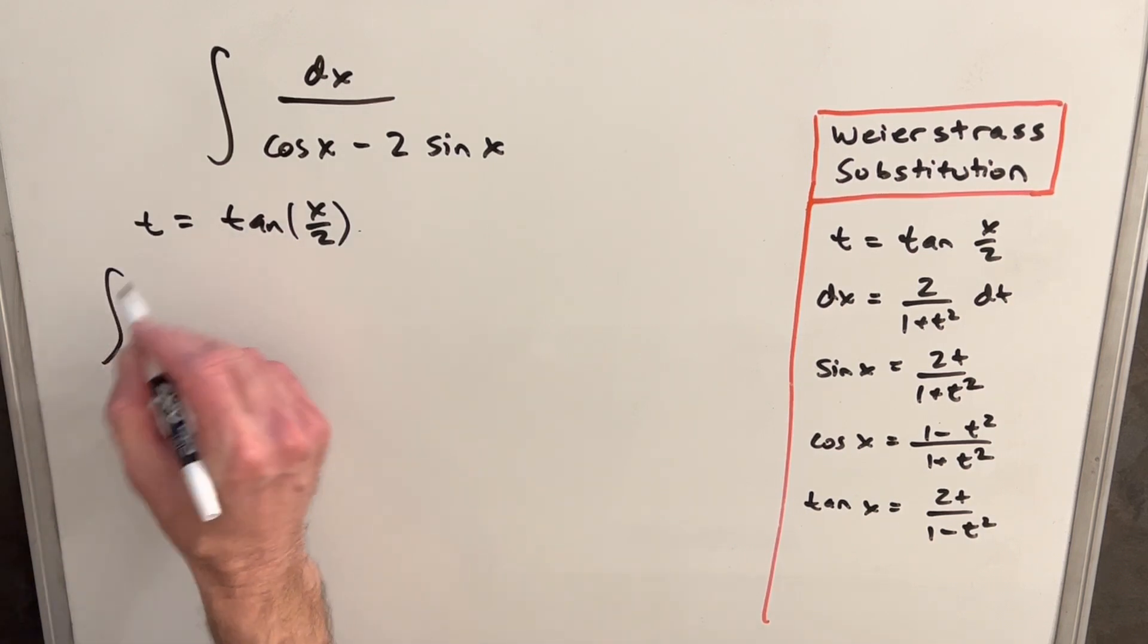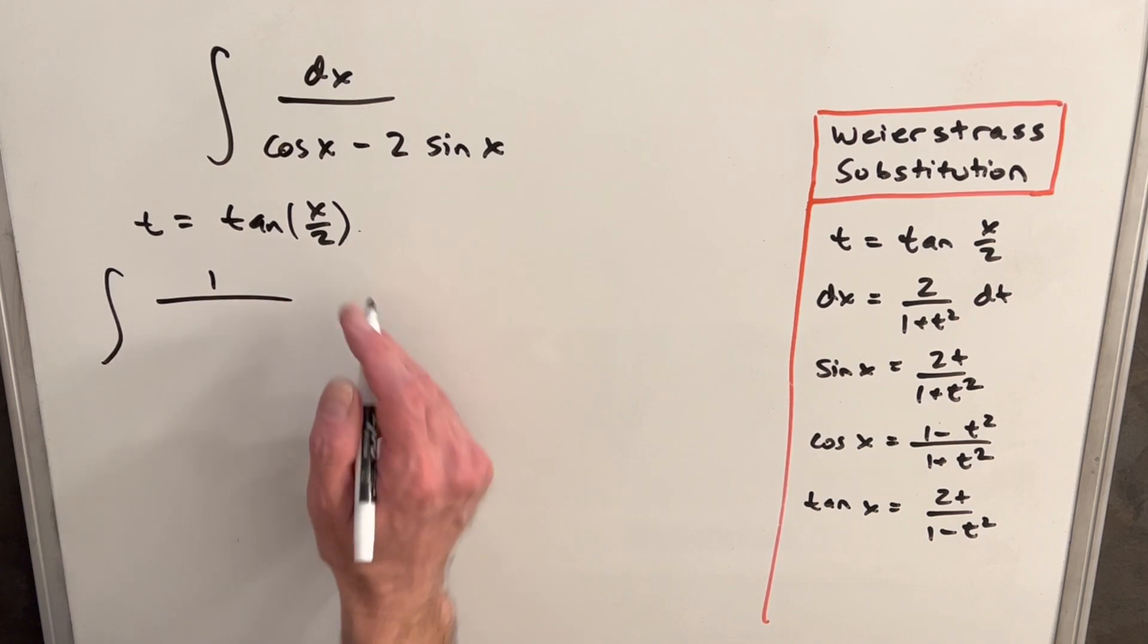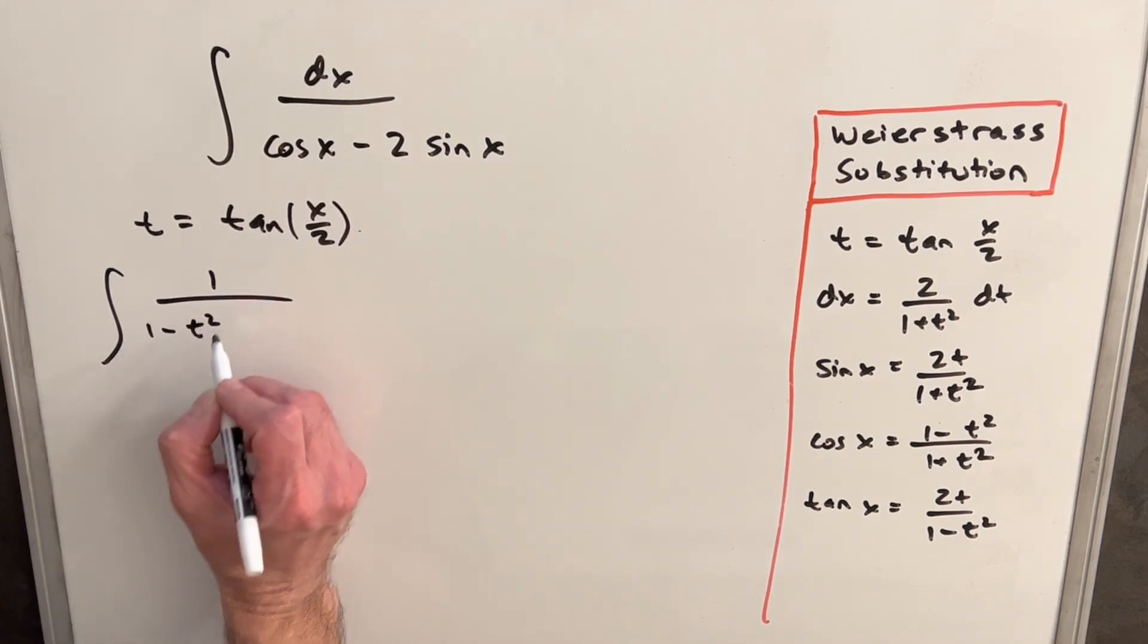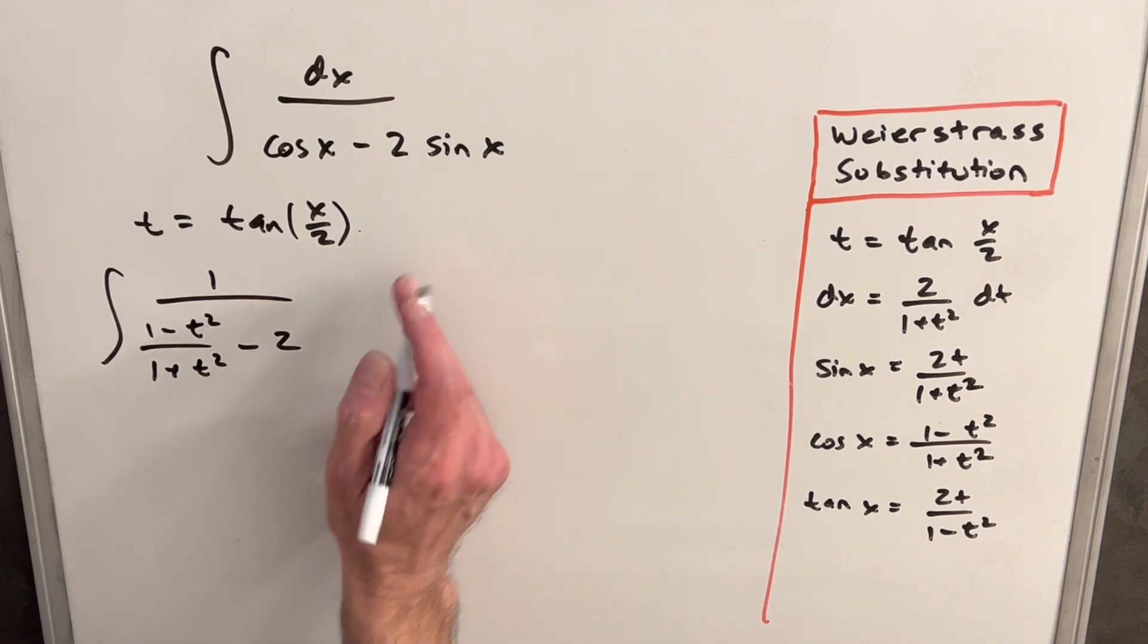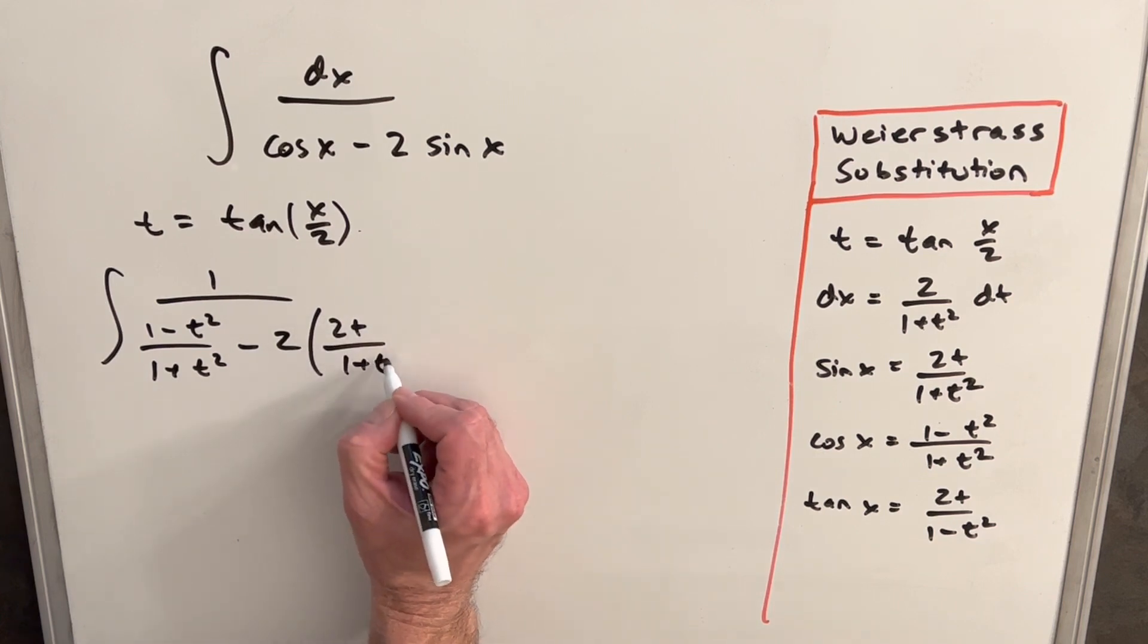We can take this integral and rewrite it using what we have over here. For cosine x, we're going to have 1 minus t squared over 1 plus t squared minus 2. Then we have our sine value, which is going to be 2t over 1 plus t squared.